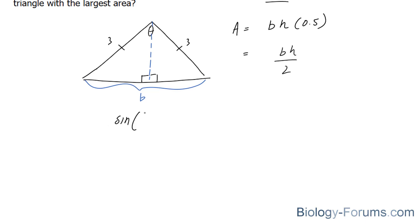Sine of theta divided by two, since we have split the triangle, is equal to the opposite, which is base over two, and the hypotenuse is three. So if we simplify the right side, we end up with base over six.